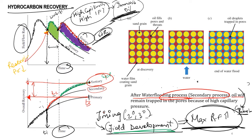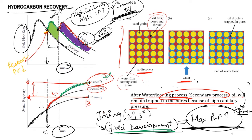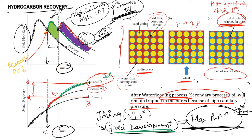After a water flooding process, oil will remain trapped in the pores because of high capillarity pressure. At discovery, sand grains are coated with water and pores are filled with oil. As water flooding proceeds, oil is swept out, but at the end of the water flood there are oil globules and droplets trapped in the pores. These trapped oil droplets exist because of high capillarity and high IFT. To recover these oil droplets, EOR must be done.